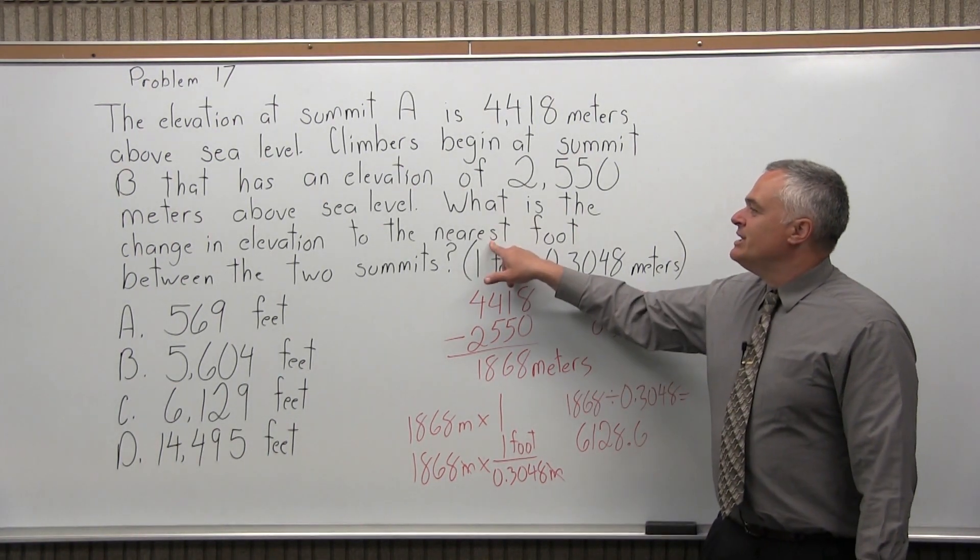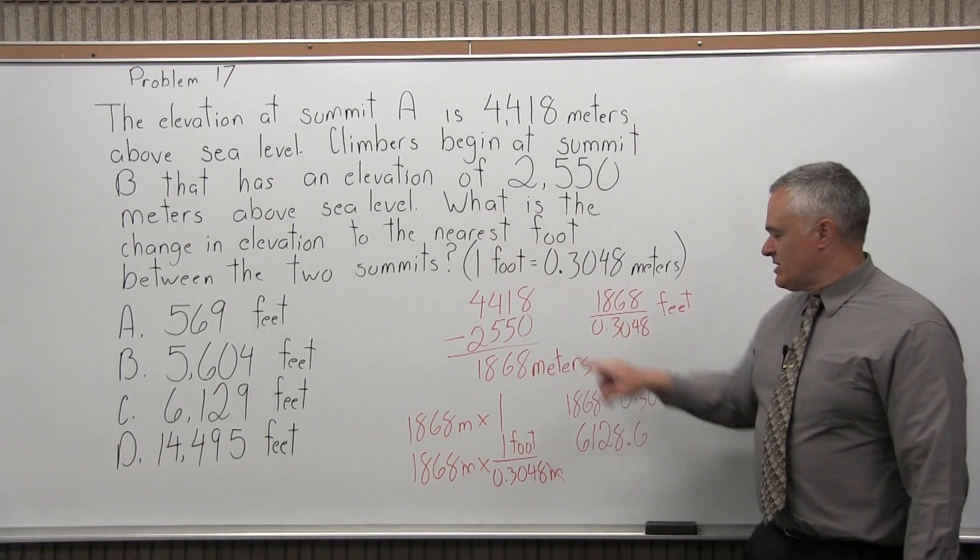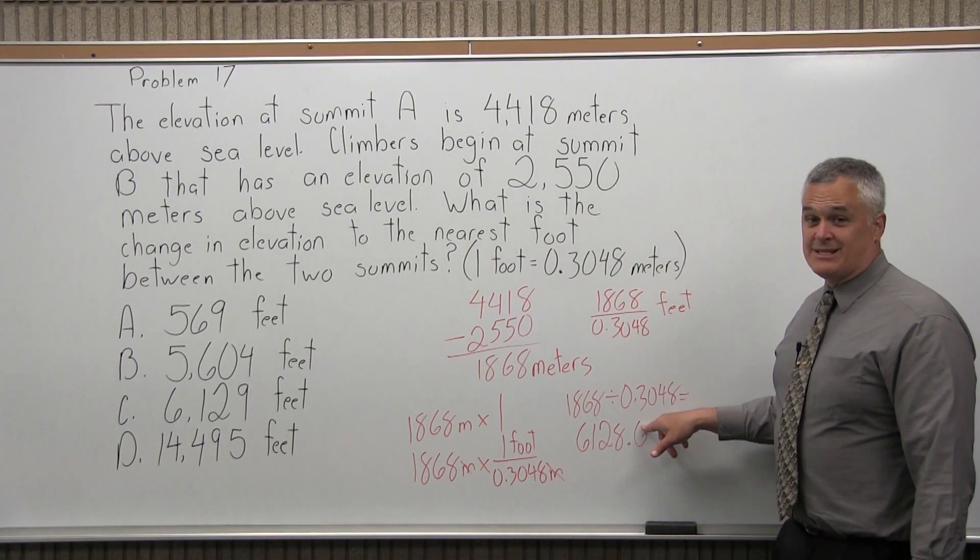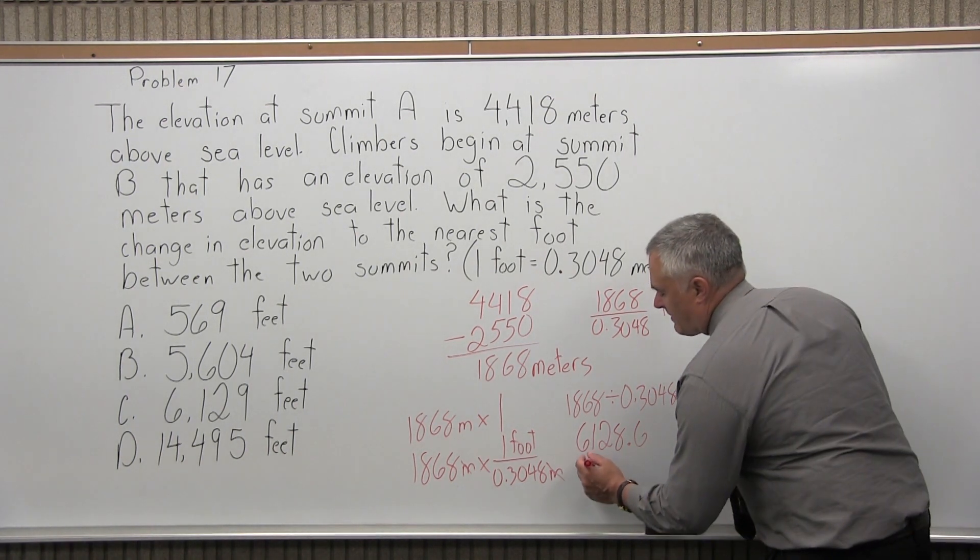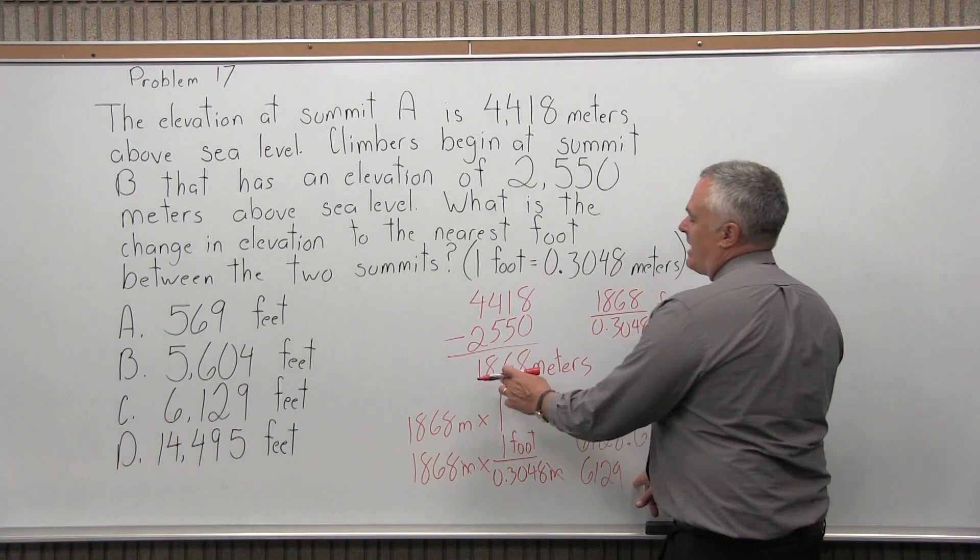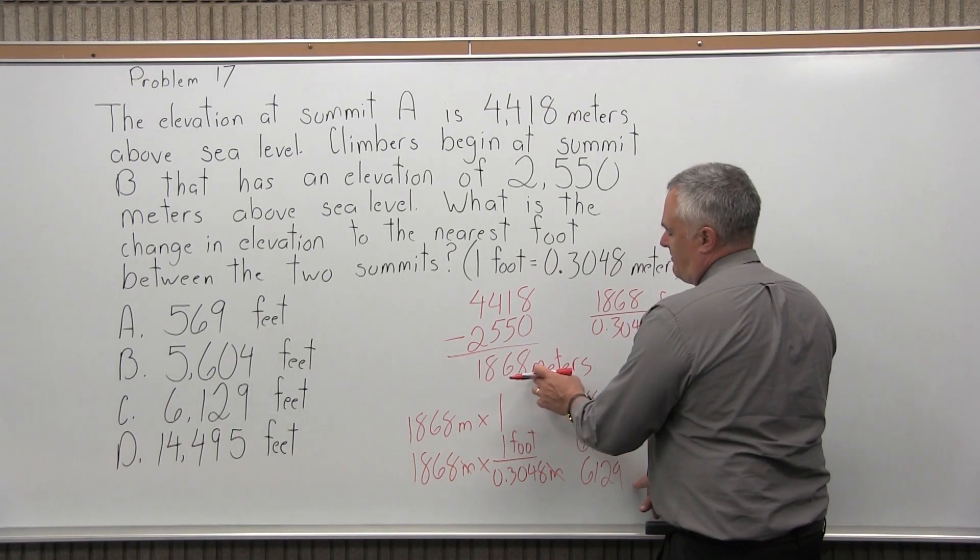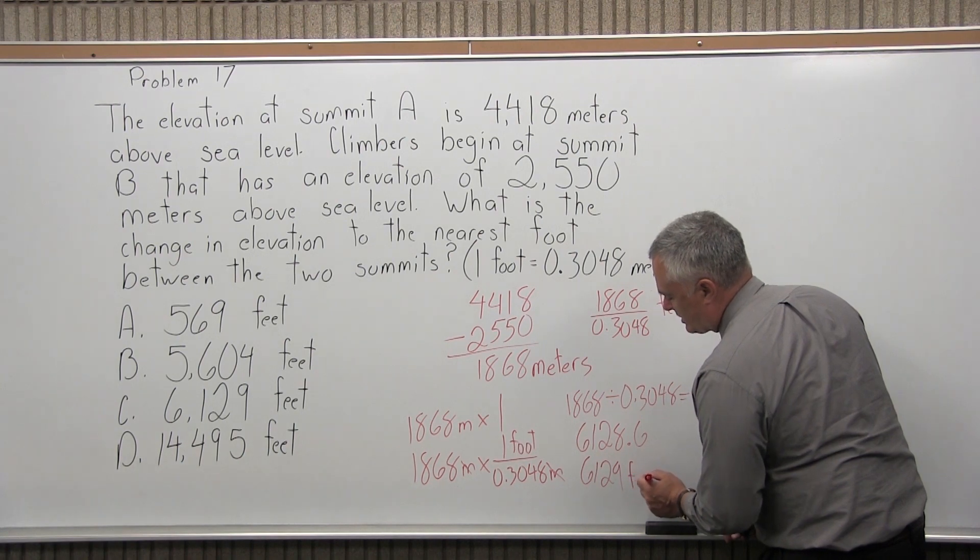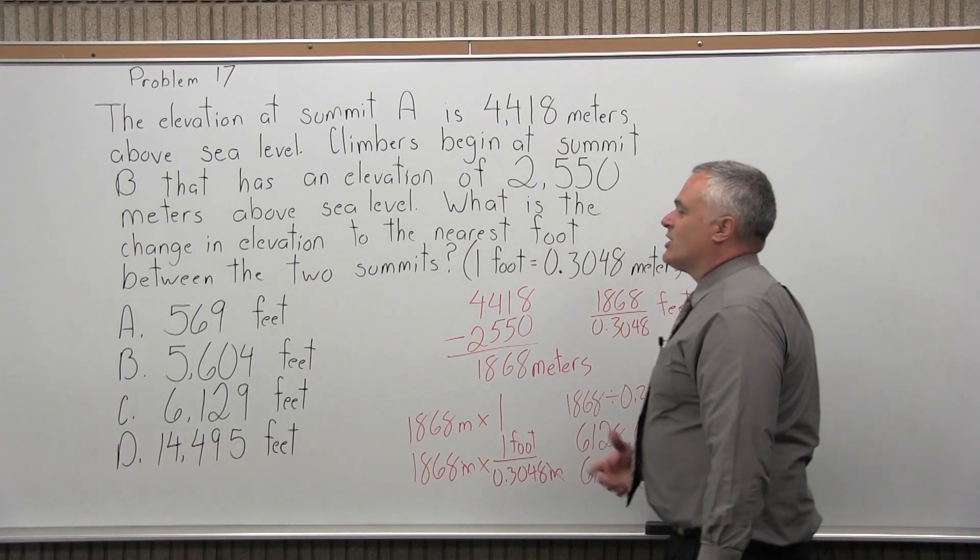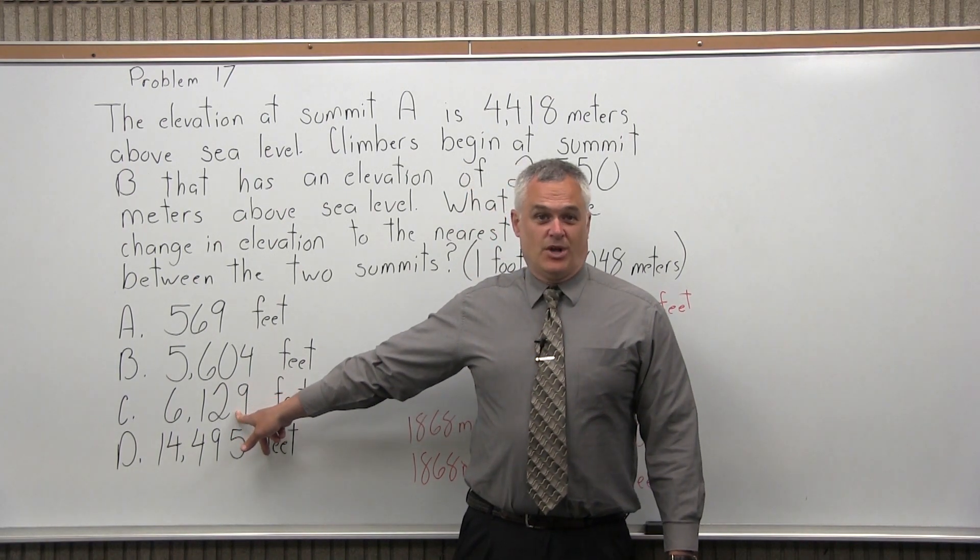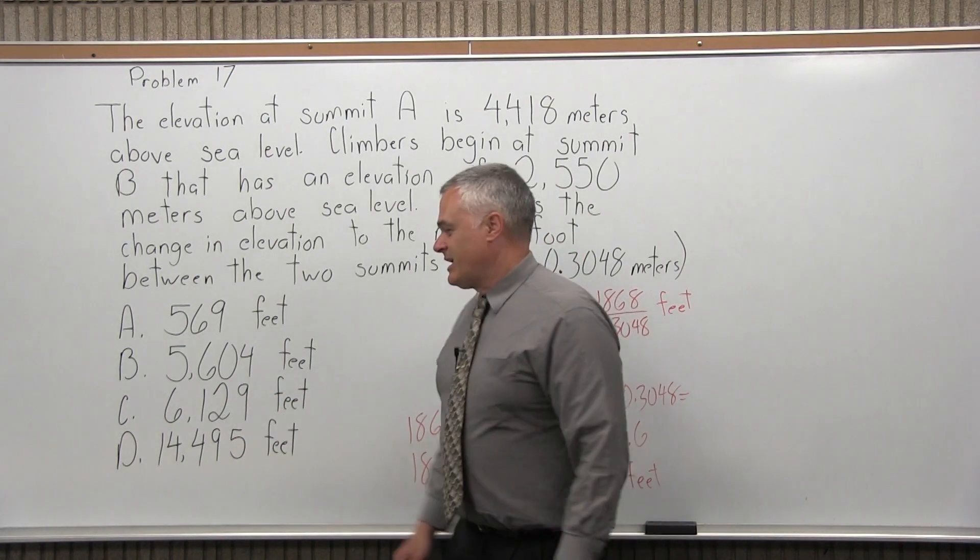Basically, I just want one more place after the decimal. And my answer says, to the nearest foot. What's the change in elevation to the nearest foot? So, that 6128.6, the 6 is big enough to make it 6129. That's the same or approximately the same as the 1868 meters, but this is in feet. 6129 feet. Now, as I go back to my list of options, it is one of the available options. It's option C, 6129. So, the answer for problem 17 is option C.